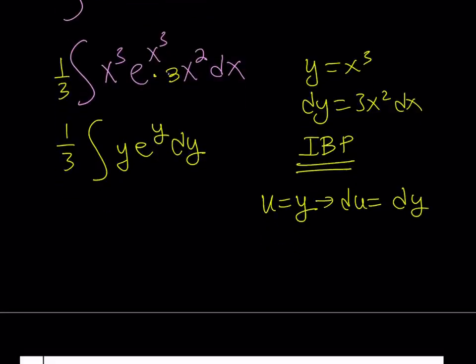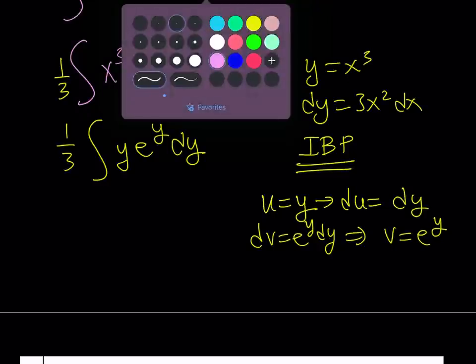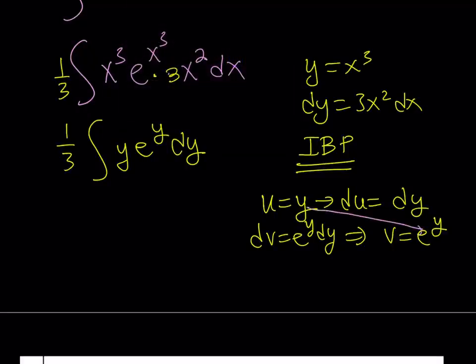And then, what happens? Well, from here, we get the dv. dv is equal to e to the power y dy. And v is going to be the integral of e to the power y dy, which is e to the power y. And then, as you know, we're going to go diagonally, multiply these, and subtract that. There's going to be a minus sign here.